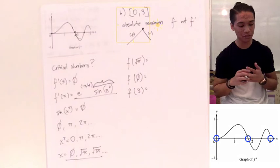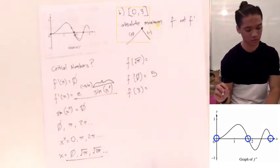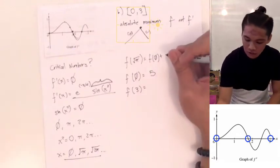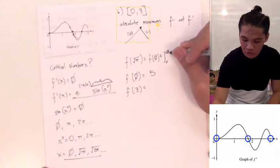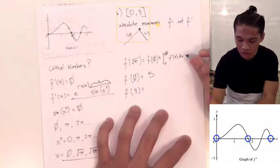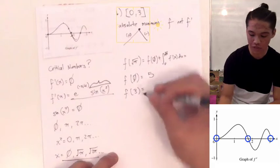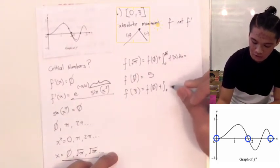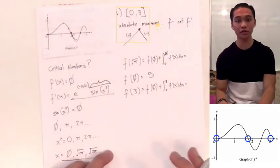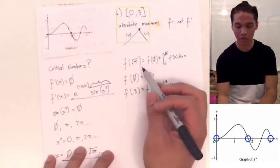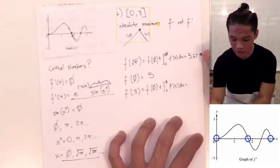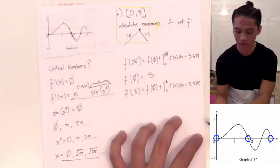The problem already gives us f(0), and it says f(0) = 5. Then f(√π) is going to be f(0) plus the integral from 0 to √π of f'(x) dx. And f(3) is f(0) plus the integral from 0 to 3 of f'(x) dx. Using our calculator, we get f(√π) ≈ 5.679 and f(3) ≈ 5.579.